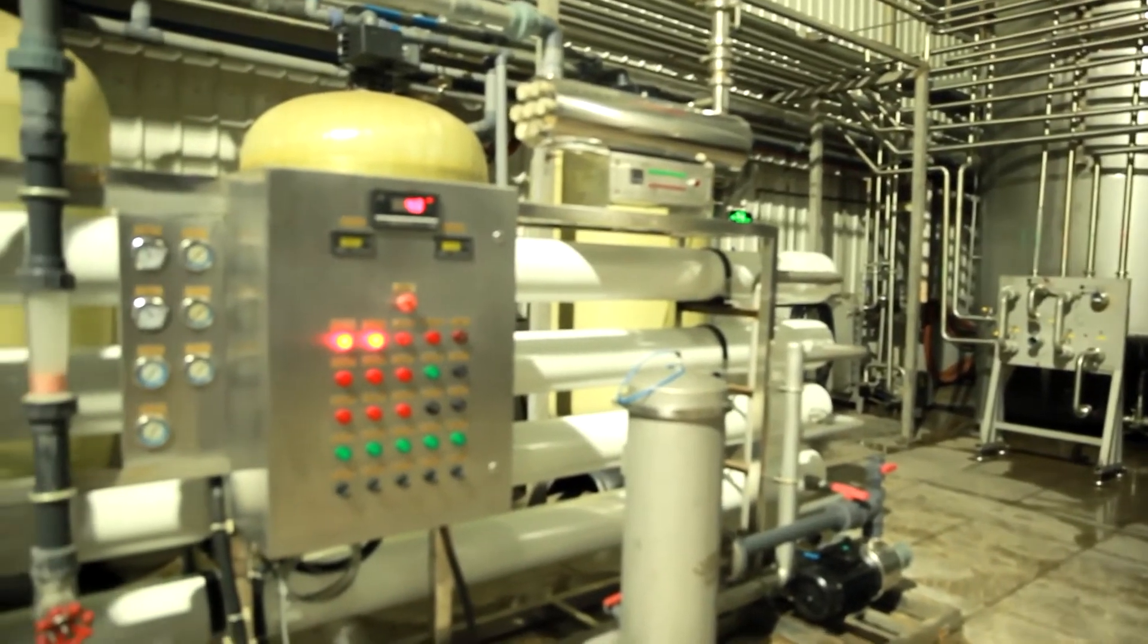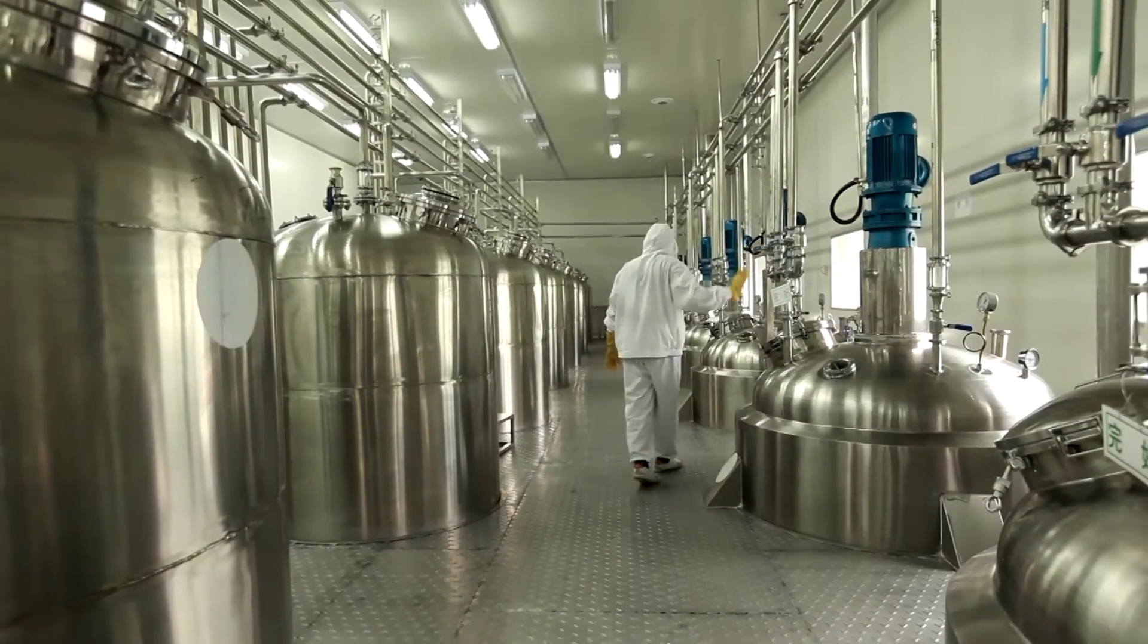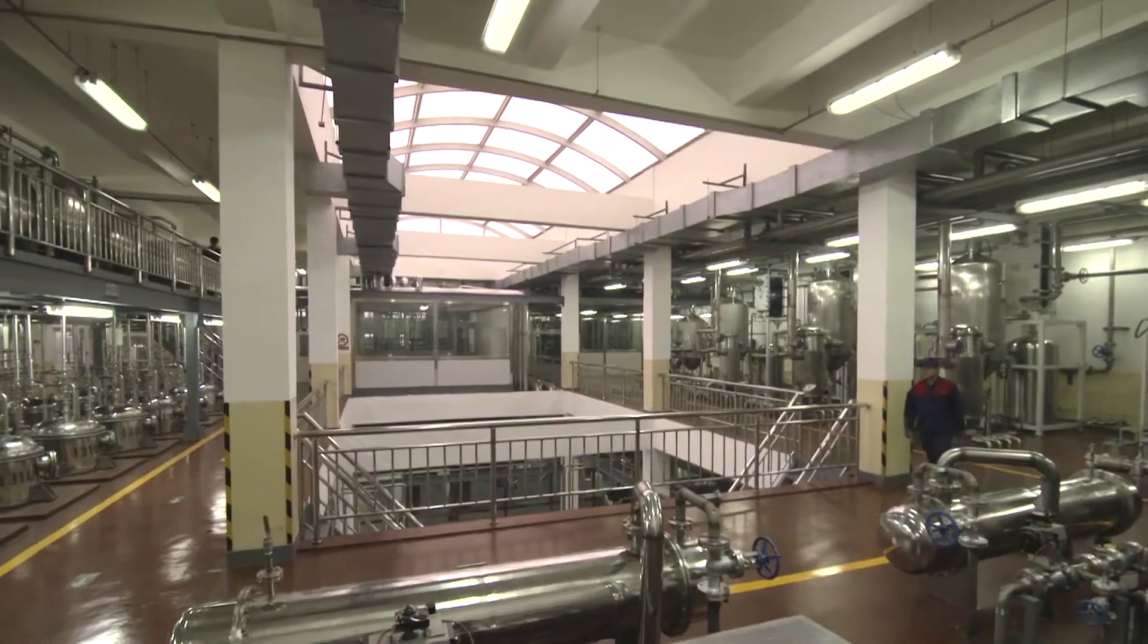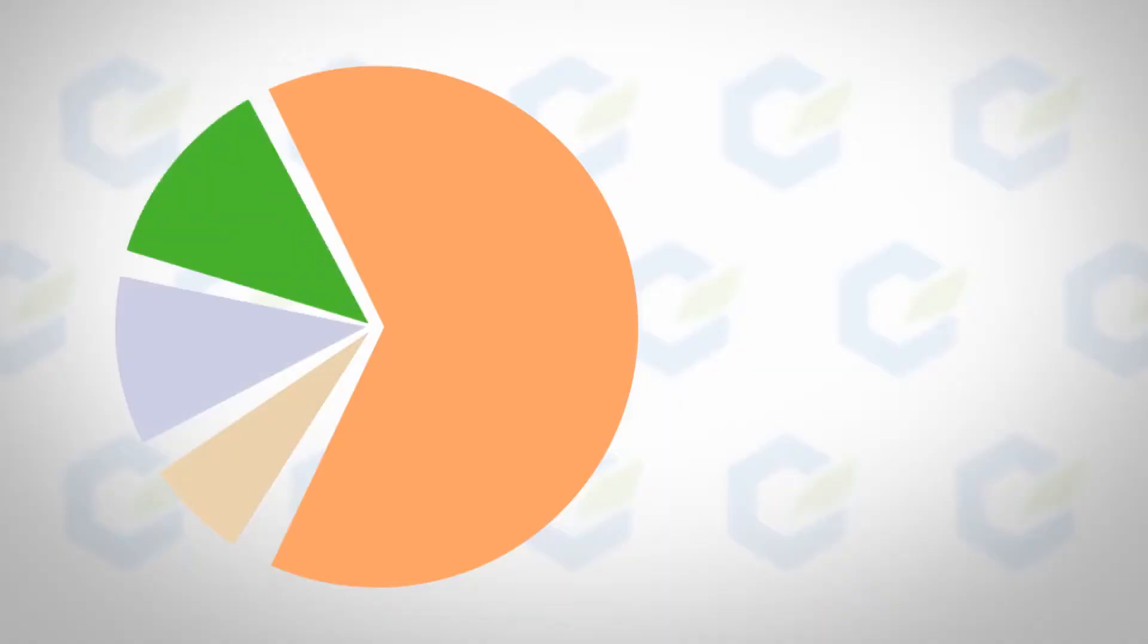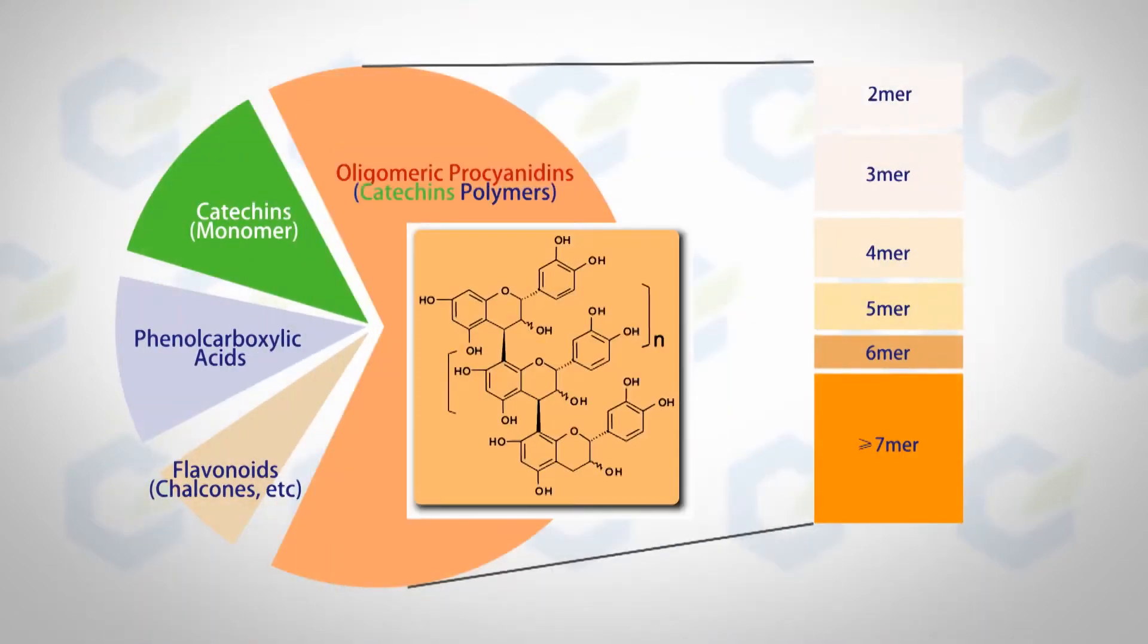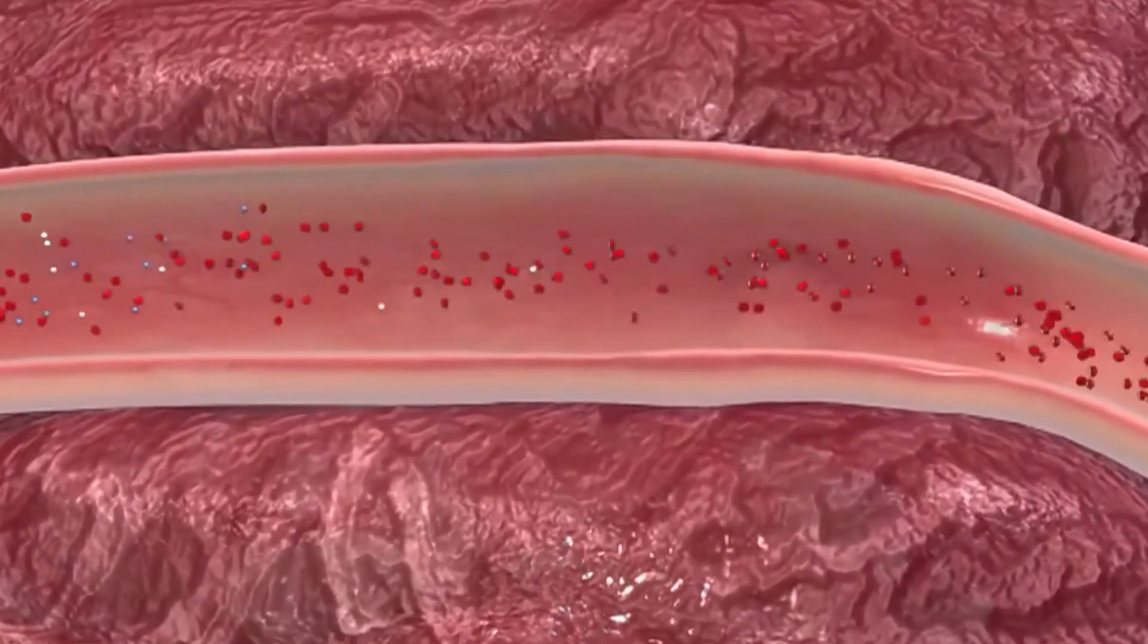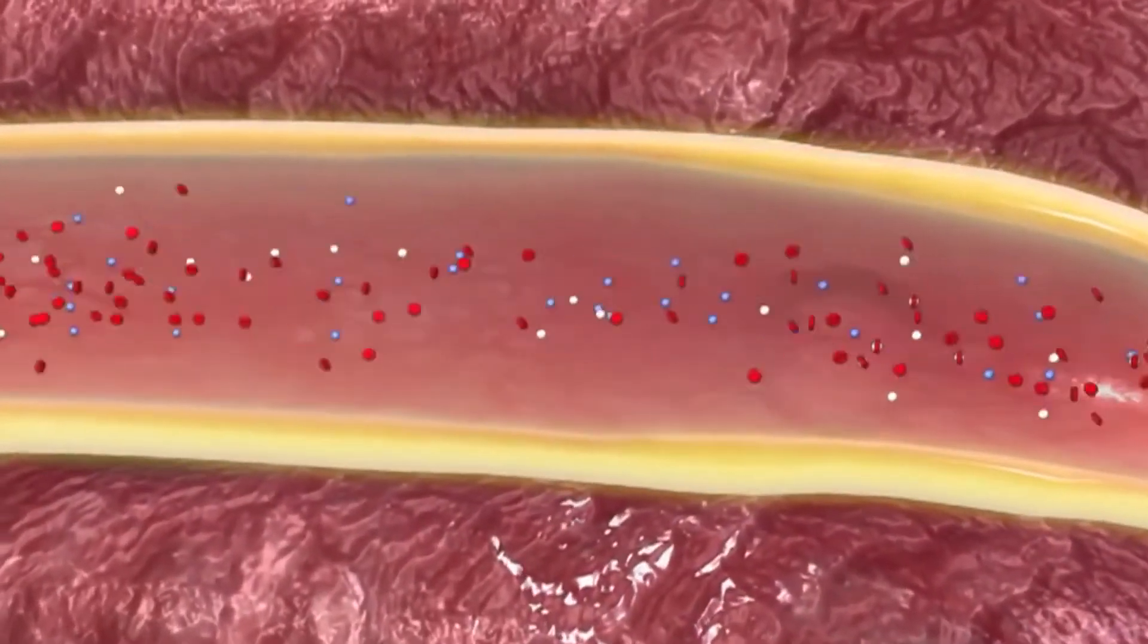Apple Phenod is a natural polyphenols product extracted from these wild unripe apples using a patented process. Apple Phenod contains a unique profile of oligomeric procyanidins OPCs as the primary constituents. Research has shown that this unique OPC composition is easily absorbed and utilized by the human body.